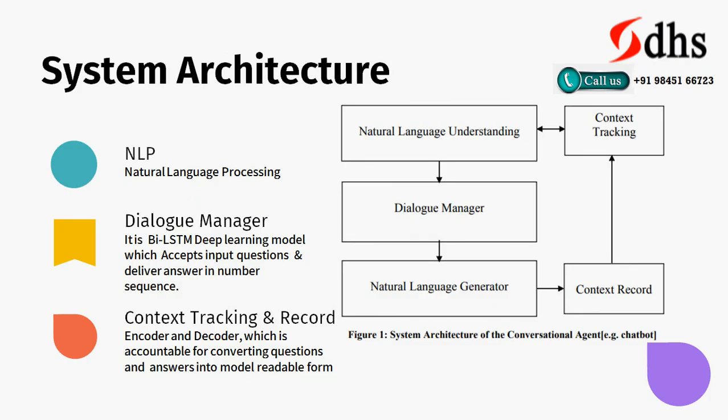The system architecture: the main component is the dialogue manager, which is your bi-LSTM engine. Whenever the user asks a question, a context recorder records that question, which then goes into natural language understanding — the model must understand what the user is asking. For that we use the encoder. The encoder gives a sequence to the dialogue manager, which determines the appropriate answer. That answer sequence is sent to the natural language generator, which generates the answer and returns it to the user via the context recorder. This cycle repeats with each question. NLP handles natural language understanding; the dialogue manager is the bi-LSTM deep learning model that accepts the input question and delivers a number sequence answer; the encoder and decoder are accountable for converting questions and answers into model-readable form.